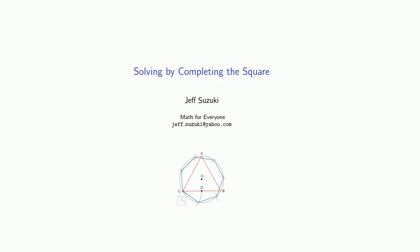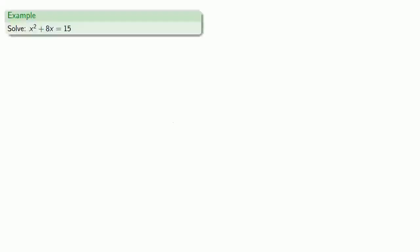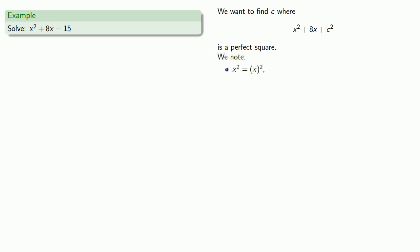Let's see if we can solve equations by completing the square. We'll try to solve x squared plus 8x equals 15. We want to find c where x squared plus 8x plus c squared is a perfect square. We note x squared is a perfect square, c squared is also a perfect square, and so we want to make sure that 8x is 2 times x times c.